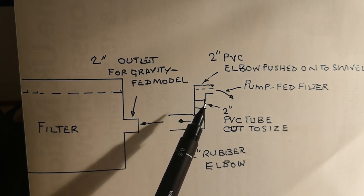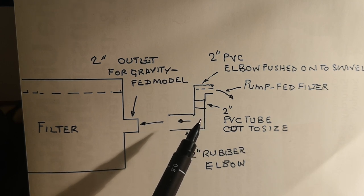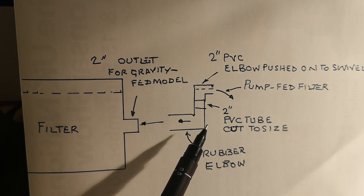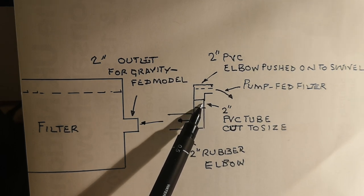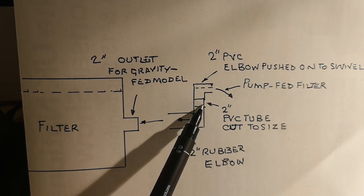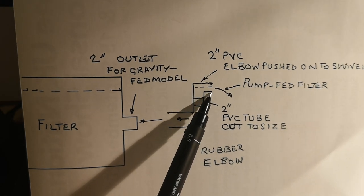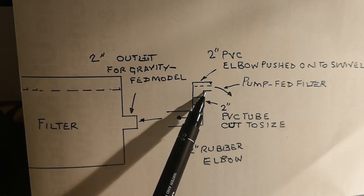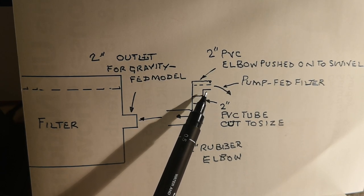This above is a 2-inch PVC elbow that will fit to the pipe stub. So that's what the assembly is: a 2-inch 90-degree rubber elbow, a short length of 2-inch PVC tube, and the PVC 90-degree elbow.